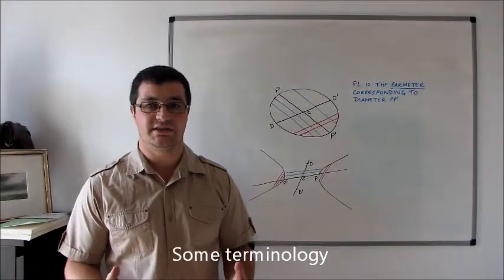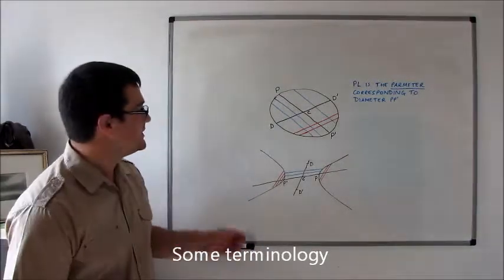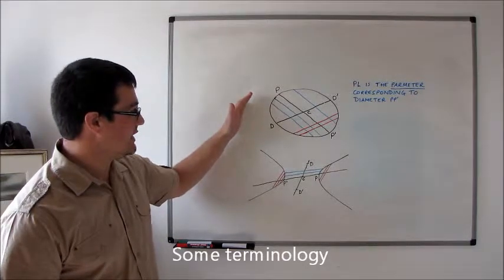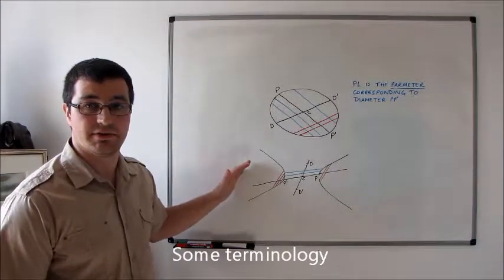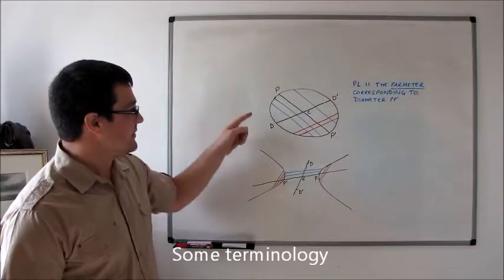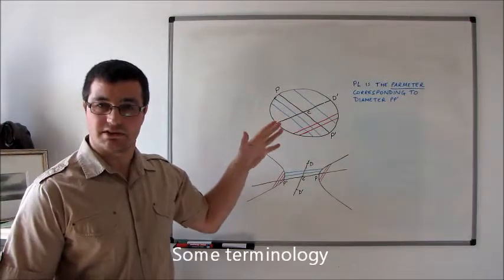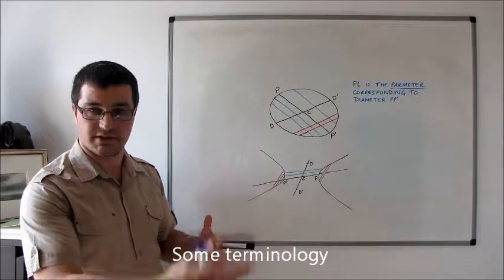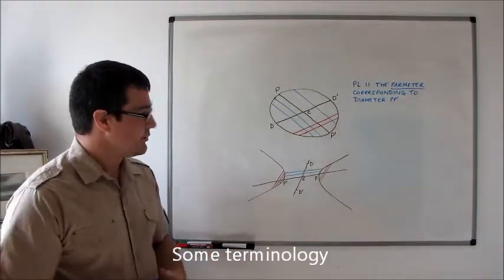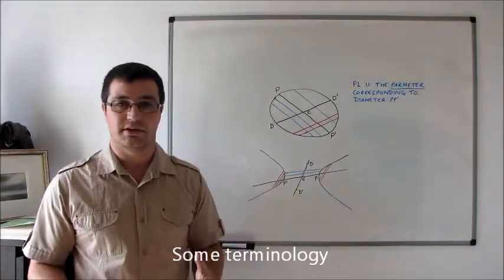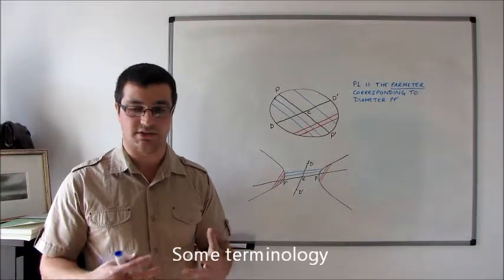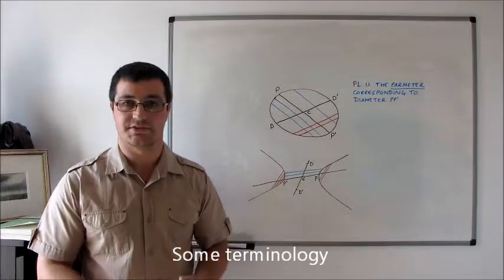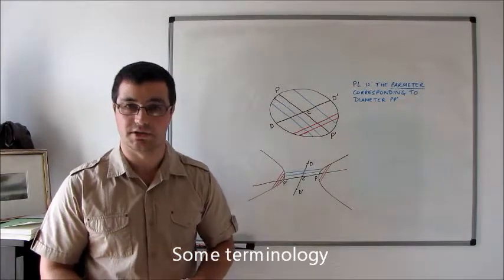Let me explain these diagrams on the board behind me. The first diagram is an ellipse, and the second is a hyperbola with two branches. Even though this is an ellipse I'm not excluding the possibility that it might actually be a circle. We're not interested in the parabola here — we're just interested in the so-called central conic sections: circles, ellipses and the hyperbola.